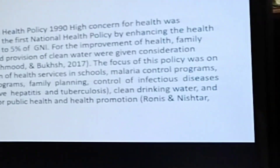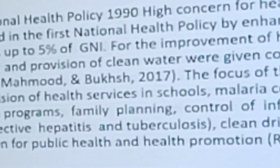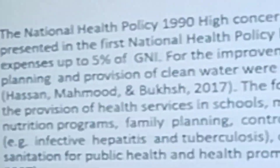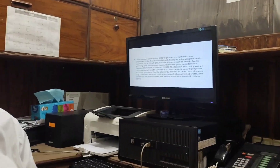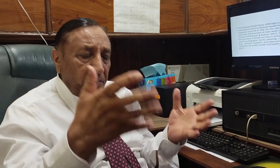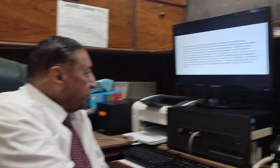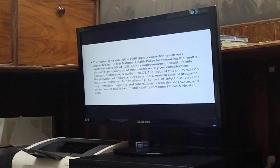The health policy of 1990 was when high concern for health was presented in the first national health policy. A key question is: when were the first national health policies promulgated, and how many policies has Pakistan framed? We have three main policies — 1990, 2001, and 2009. The 2009 policy could not be implemented because in 2010–11, the 18th Amendment was implemented.